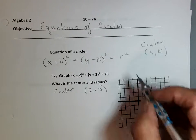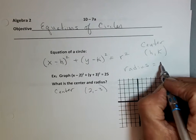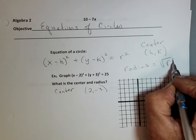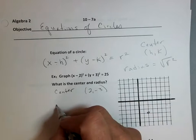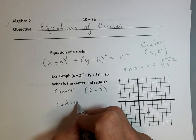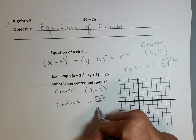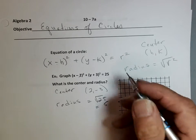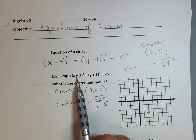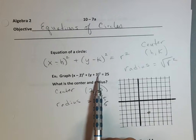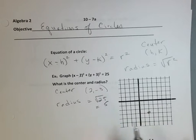Now, the radius of the circle is going to simply be the square root of that number. So the radius of this circle is going to equal the square root of 25, which is five. So it's that easy. We find the center by taking the opposite — that's the center, so two, negative three. And then the radius is the square root of this number, so I'm going to graph it.